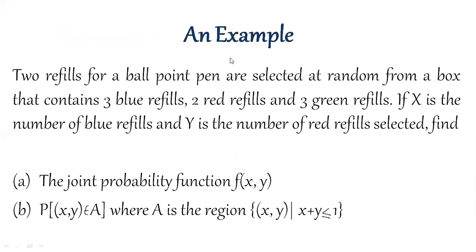Let's look at an example of this function and we will try to evaluate it. Two refills for a ballpoint pen are selected at random from a box that contains 3 blue refills, 2 red refills and 3 green refills. If x is the number of blue refills and y is the number of red refills selected, we need to find the joint probability function f(x,y) and the probability of x,y in the region A where A is the region such that x plus y is less than equal to 1.